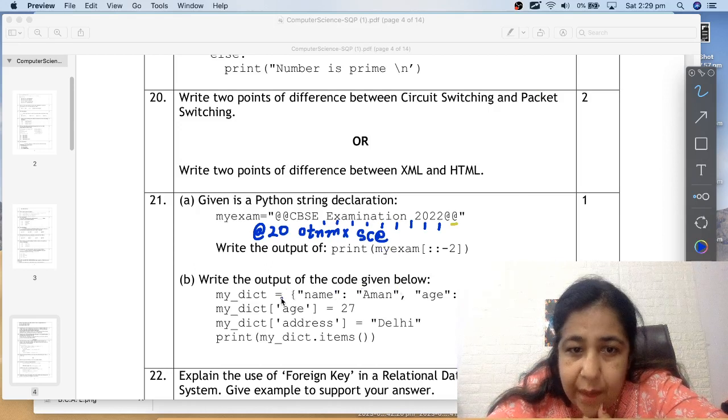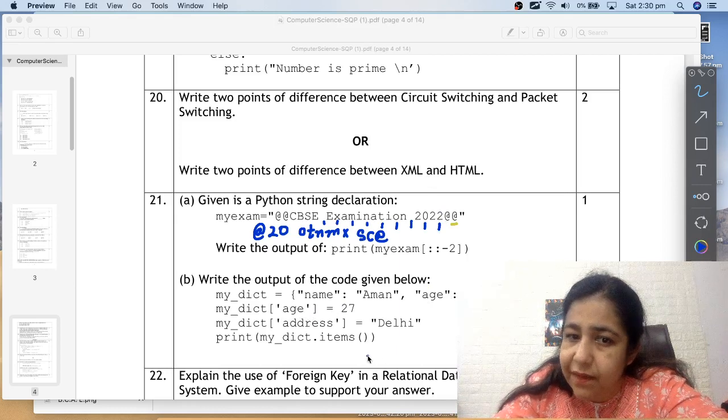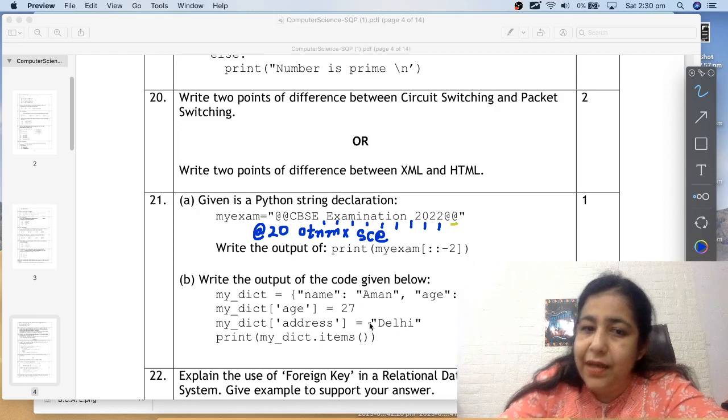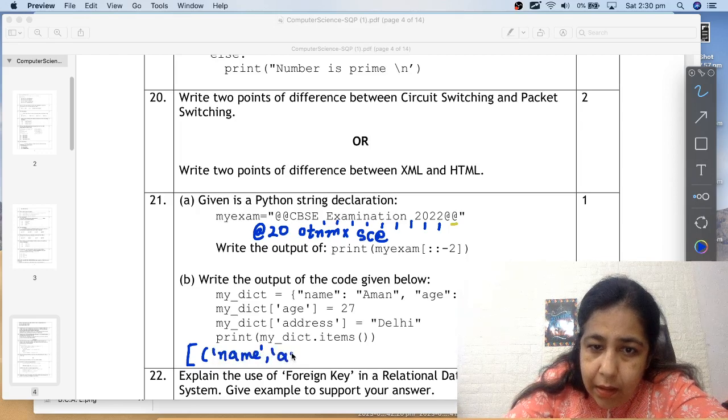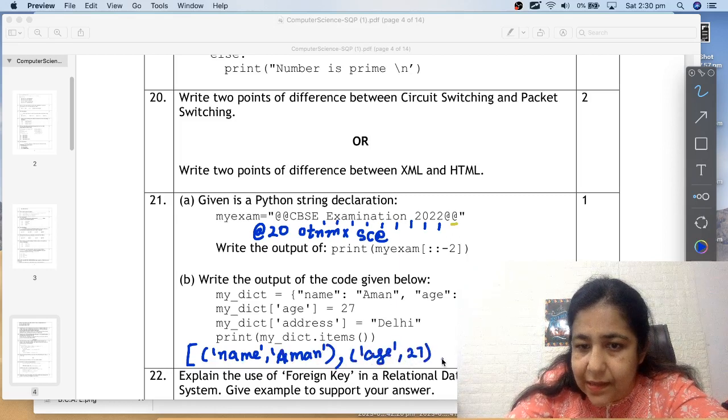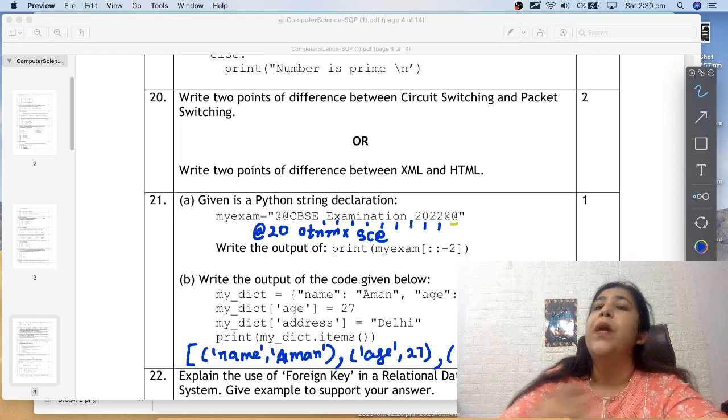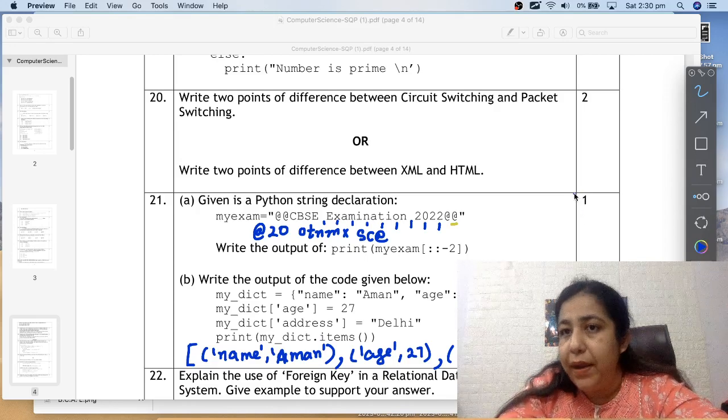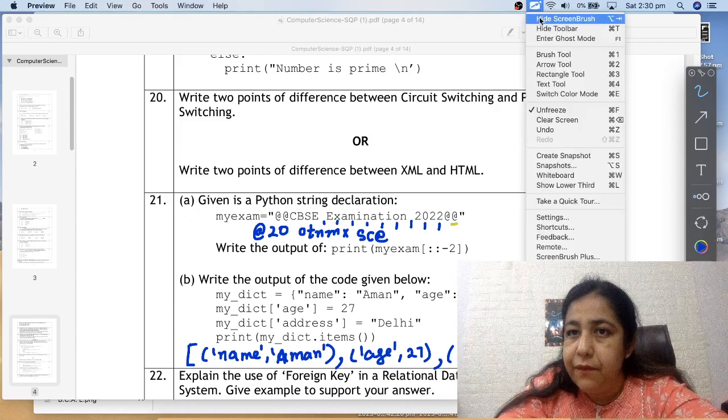Next question, write the output of the code given below. Here we have made a dictionary with name and age. My dictionary age is set to 27. Age is already a key, so it will change to 27. Address is not already a key, so a new key will be added. When we print my dictionary dot items, items are shown as a list of tuples. So you will have name comma aman as a tuple, then comma, then age comma 27 as a tuple, then we'll have address comma delhi as a tuple, and list will close. Items method of dictionary always gives result in the form of list of tuples. In these questions data type matters a lot, so write your format very carefully. It's a list of tuples.